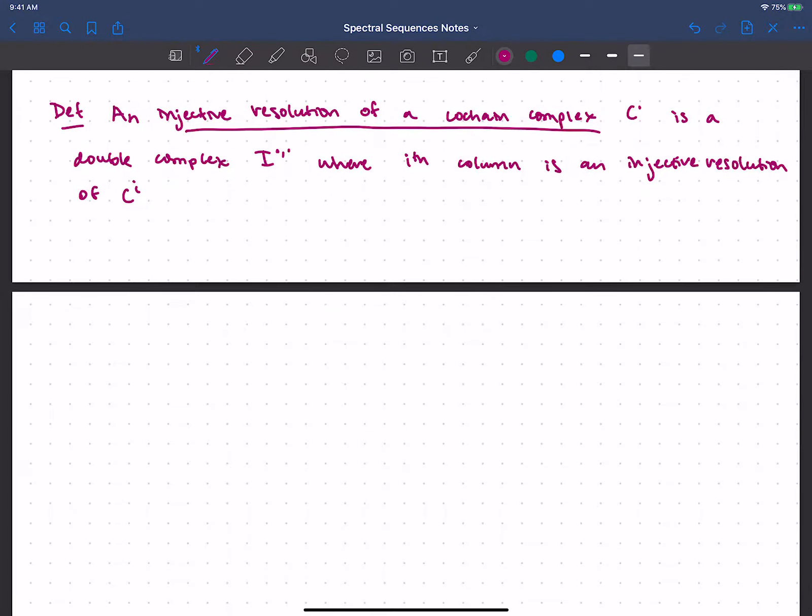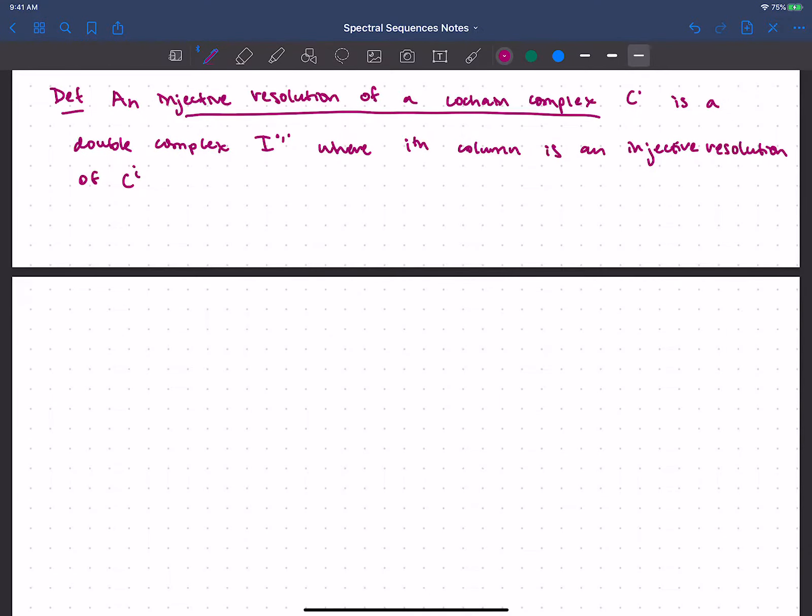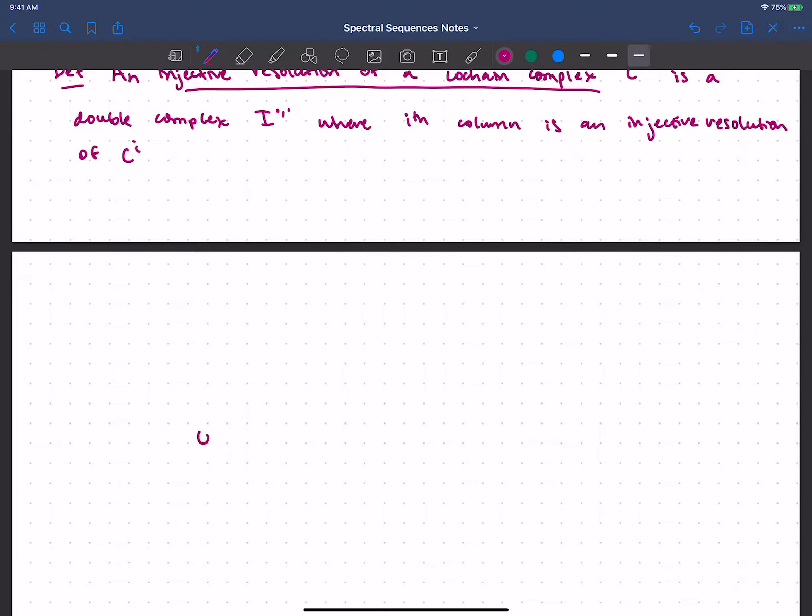So what does that look like? So I have some cochain complex. C0 maps to C1, maps to C2, and so on. I could start that with a zero. And I want to take an injective resolution at each spot. Those should all be injective resolutions. And of course, I should have this continuing on.